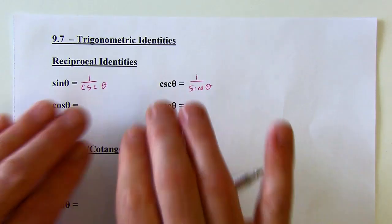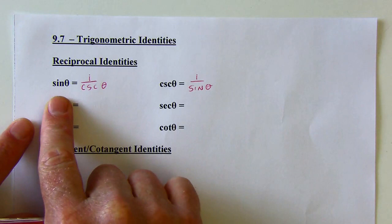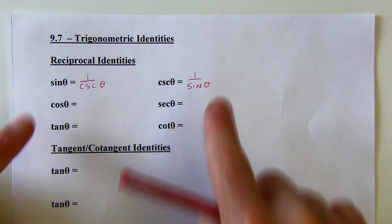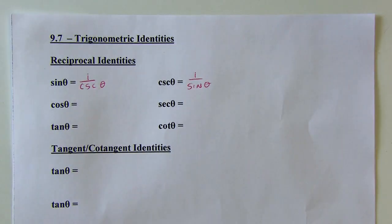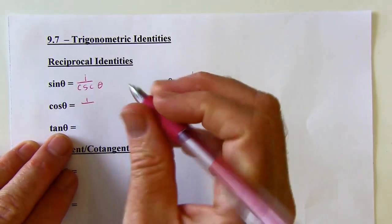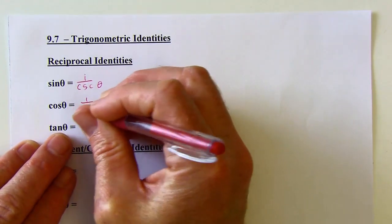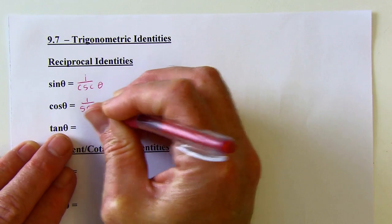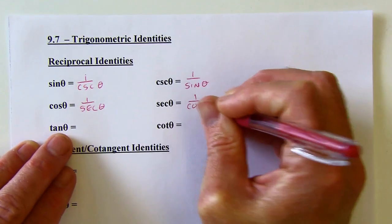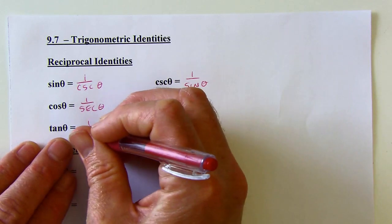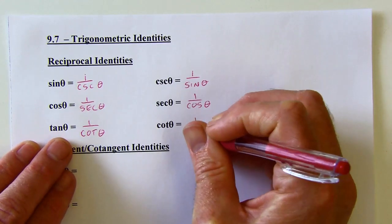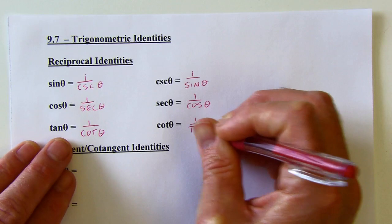That's what a reciprocal is — if you flip the fraction upside down. Think about sine over 1; the reciprocal of that would be 1 over sine. Cosine is going to be the reciprocal of secant, and secant is the reciprocal of cosine. Same kind of deal with tangent and cotangent. So these are the reciprocal identities.